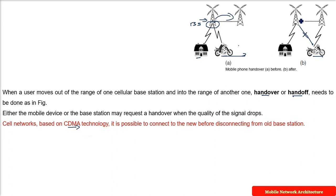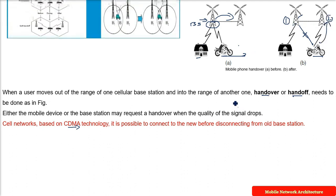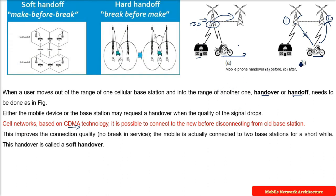Rather than disconnecting from one base station, the device can connect to the next base station without disconnecting first. There will be no break in service, and the mobile is actually connected to both base stations for a very short while. One base station's signal quality may be low, the other will be low but peaking. This handover is called soft handover.